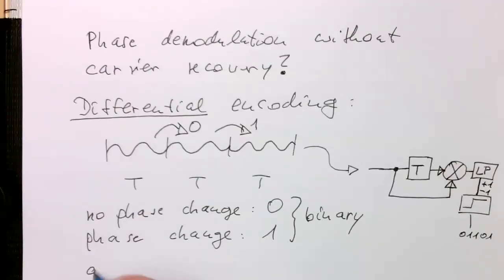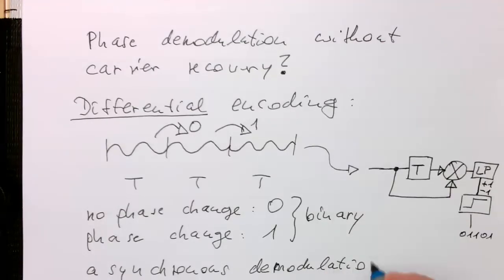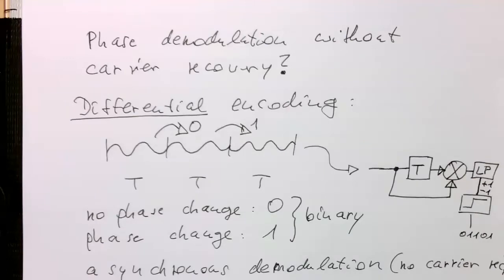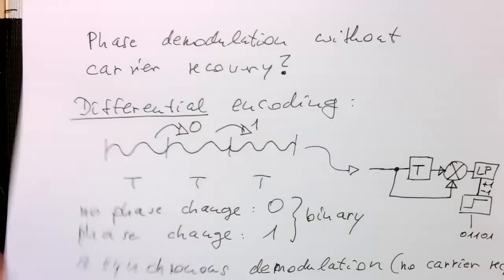So such a demodulation scheme is called asynchronous demodulation. That's a very important concept. Asynchronous means we don't need the carrier to demodulate it. No carrier required for this demodulation scheme. That's a bit falling off the slide there, but that's clear what is meant with that.